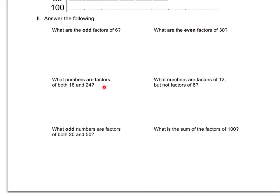What numbers are factors of both 18 and 24? So here you're going to look at that list, you're going to compare all the factors of 18 to all the factors of 24, and any ones that they both share, you're going to list here. Any ones that they don't share, you're not going to list.